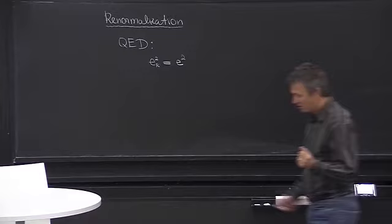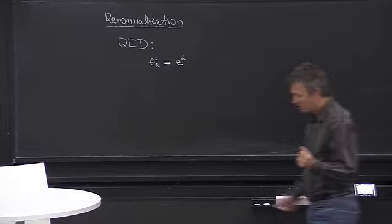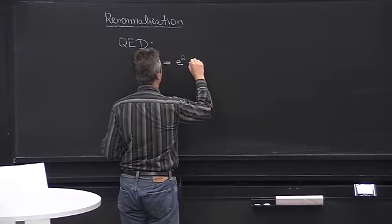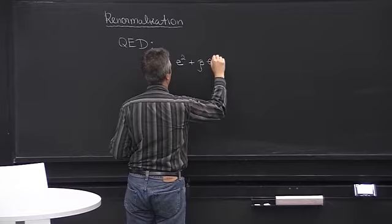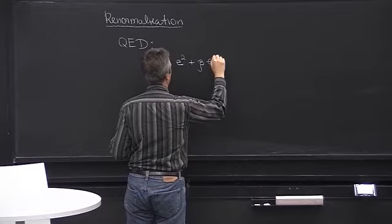Separated by a microscopic distance. If you calculate it in quantum field theory, you get a whole bunch of corrections. In particular, the first correction will be proportional to E to the 4th, and then there will be a whole series of other corrections. This is just perturbation theory for this charge.